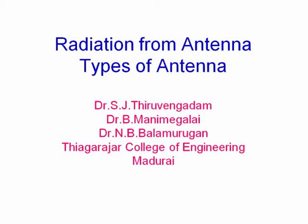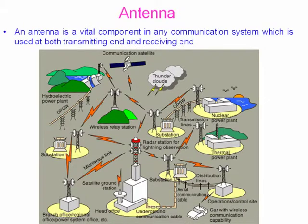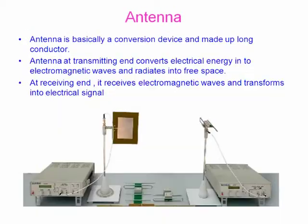Our presentation focuses on radiation from antenna and different types of antenna. This picture shows various wireless communication systems such as hydroelectric power plant, substation, wireless relay station, microwave link, satellite base station, communication with the car, etc. Here we can say that antenna plays an important role. We can define an antenna as a vital component in any communication system which is used at both transmitting end and receiving end.